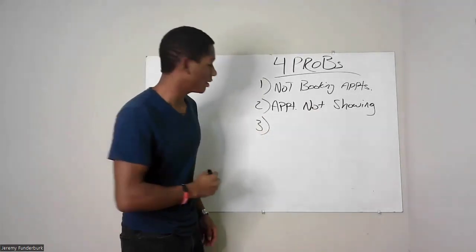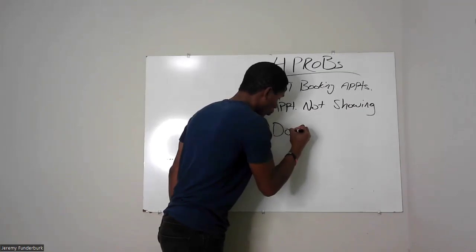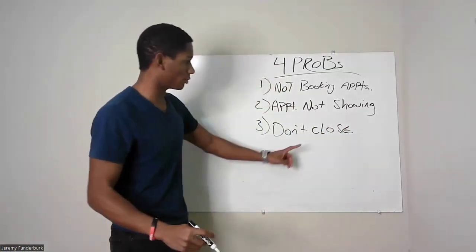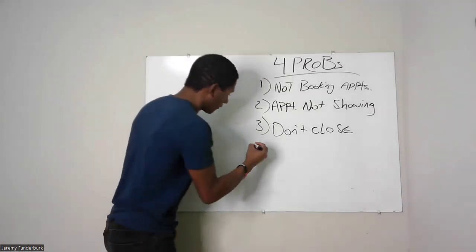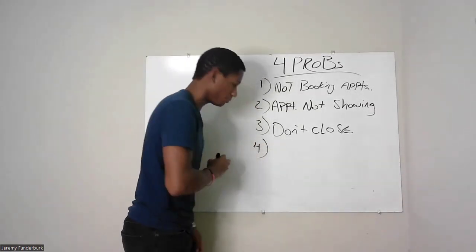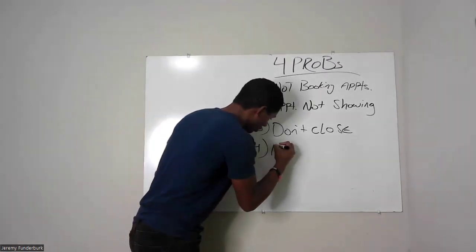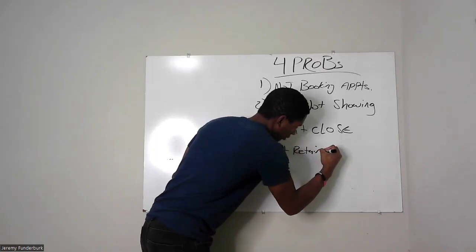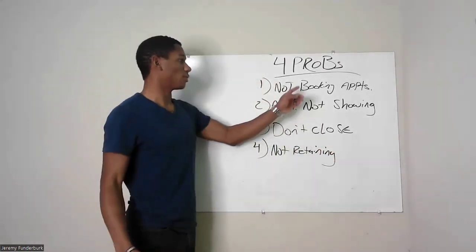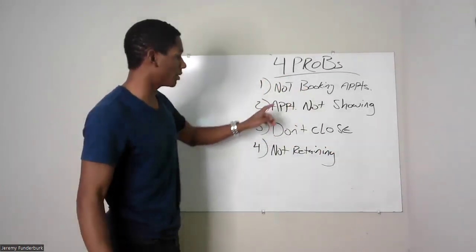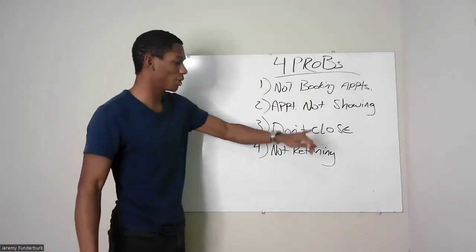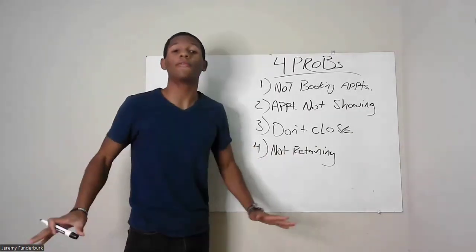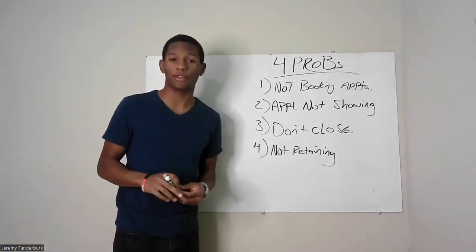Third problem you're going to have is when they do show up, you don't close the sale. And your fourth and final problem is simply you are not retaining your clients. So first problem, you're not booking appointments. Two, appointments aren't showing. Three, you don't close. And four, you're not retaining your clients. These are literally the only four problems you're going to have in your agency.